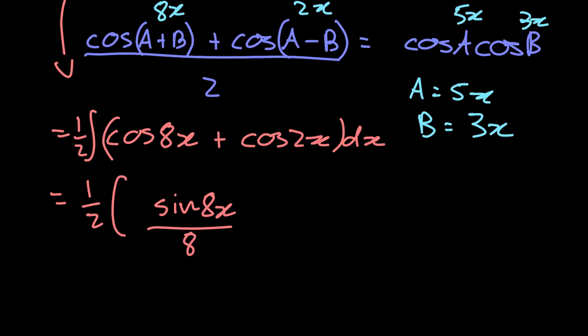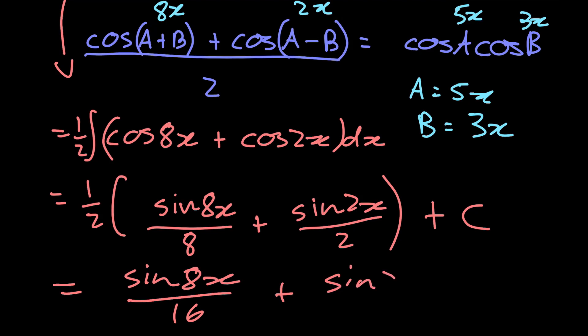Then for cosine of 2x, when we integrate that, we get plus sine of 2x divided by the derivative of what's inside our cosine, which is the derivative of 2x, which is 2. And then of course plus c, our constant of integration. So our final answer is then simply sine of 8x over 16 plus sine of 2x over 4 plus c.